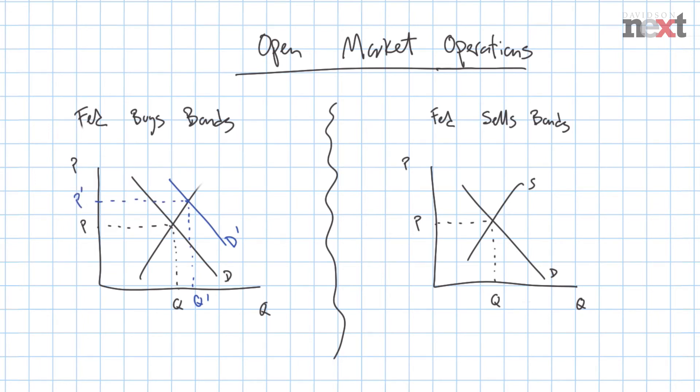Conversely, when the Fed engages in contractionary monetary policy and sells bonds, the Fed becomes a supplier of bonds, pushing the supply of bonds to the right as they sell their bonds into the market. This increases the quantity of bond transactions that happen and lowers the price of the bonds that the Fed is selling.